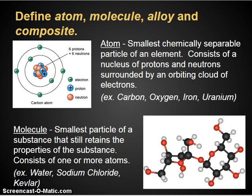First, let's define a few terms. If you've taken chemistry, you've probably seen these before, but we need to specifically be able to identify these. An atom is the smallest chemically separatable particle of an element. You can separate it down into electrons, protons, and neutrons, but once you do that, the atom loses its properties. It consists of a nucleus of protons and neutrons surrounded by an orbiting cloud of electrons. Examples would be carbon, iron, oxygen, uranium, et cetera.